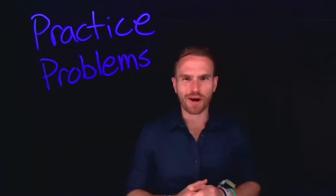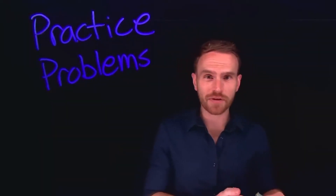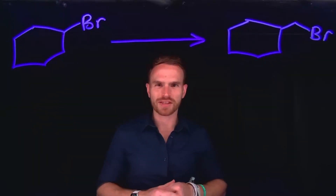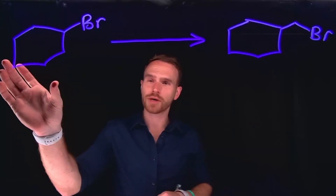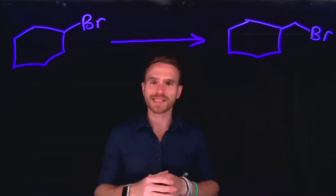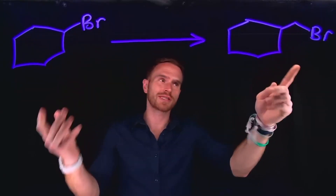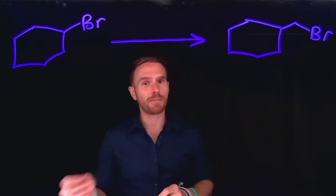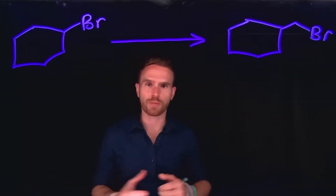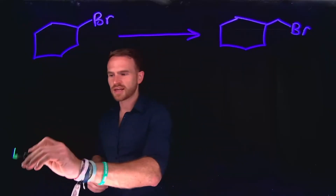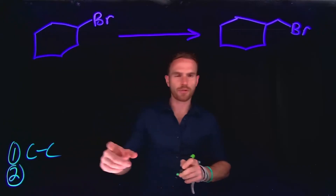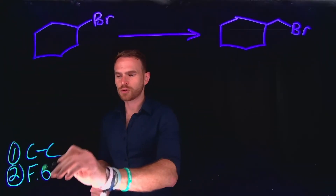Now let's try some practice problems to gauge your understanding. You should pause the video, try these problems independently, and then resume to check your understanding. On the surface, this problem may seem relatively straightforward because we're not doing any functional group transformations — we're only extending the carbon chain by a single carbon. Notice there's a one-carbon difference between our reactants and our products. However, this requires a multi-step synthetic approach. Using retrosynthetic analysis, we know we're looking for two things: a change in the number of carbon-carbon bonds, and a functional group transformation.